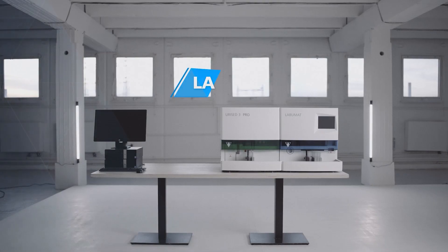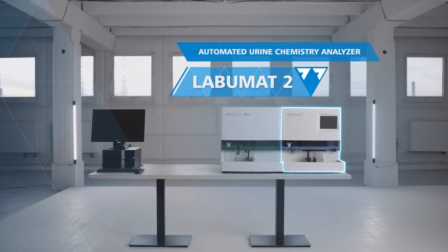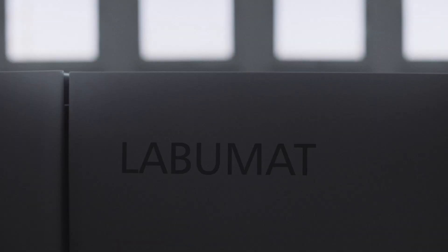Labumat 2 is an automated urine chemistry analyzer that evaluates 10 chemical and 3 physical parameters.